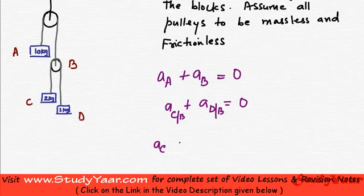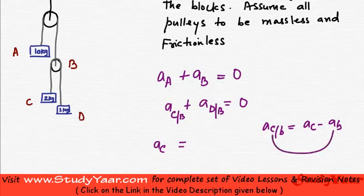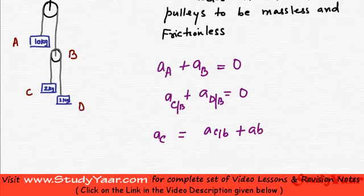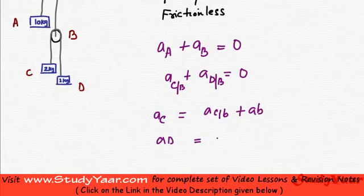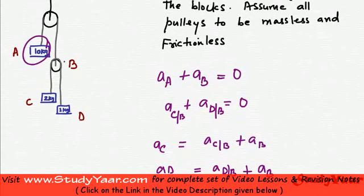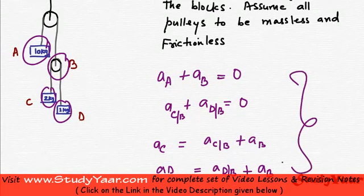The acceleration of C: we know that A of C with respect to B is A of C minus A of B. Therefore, A of C equals A of B plus A of C with respect to B. So A of C equals A of C with respect to B plus A of B. And A of D equals A of D with respect to B plus A of B. So the acceleration of the pulley and blocks is governed by these four equations.